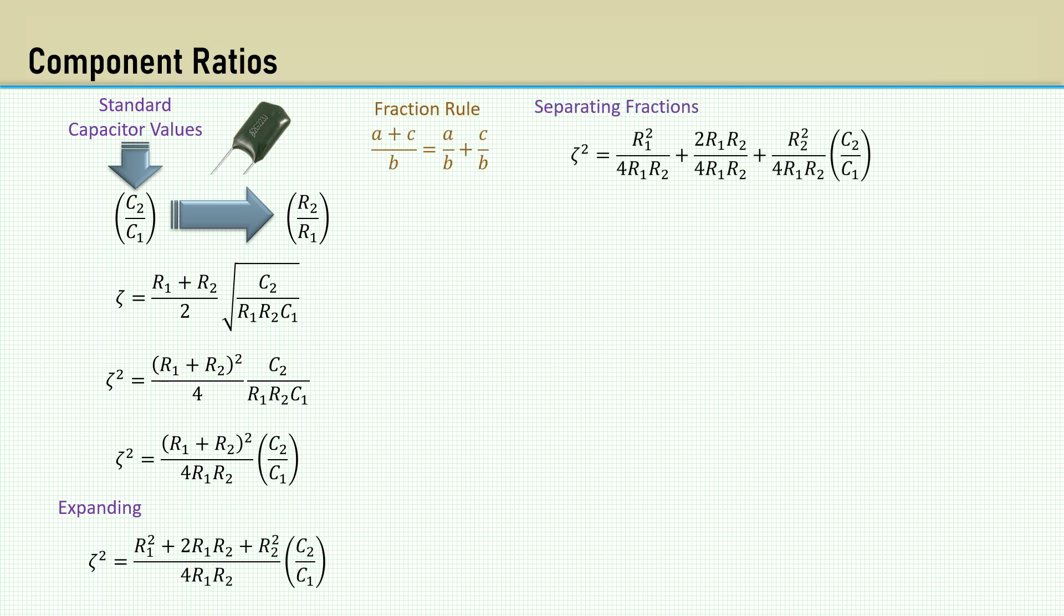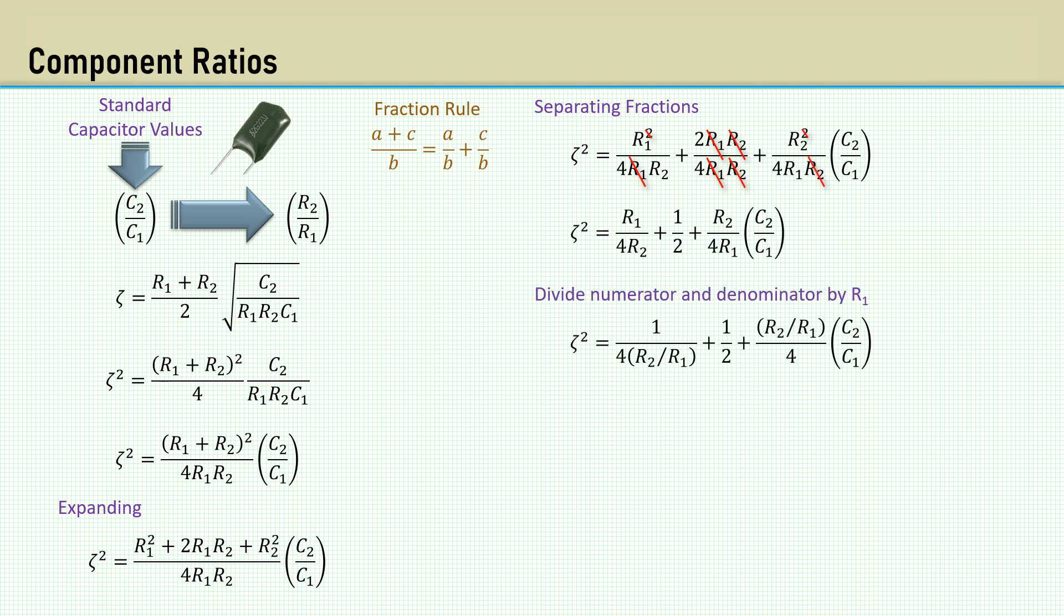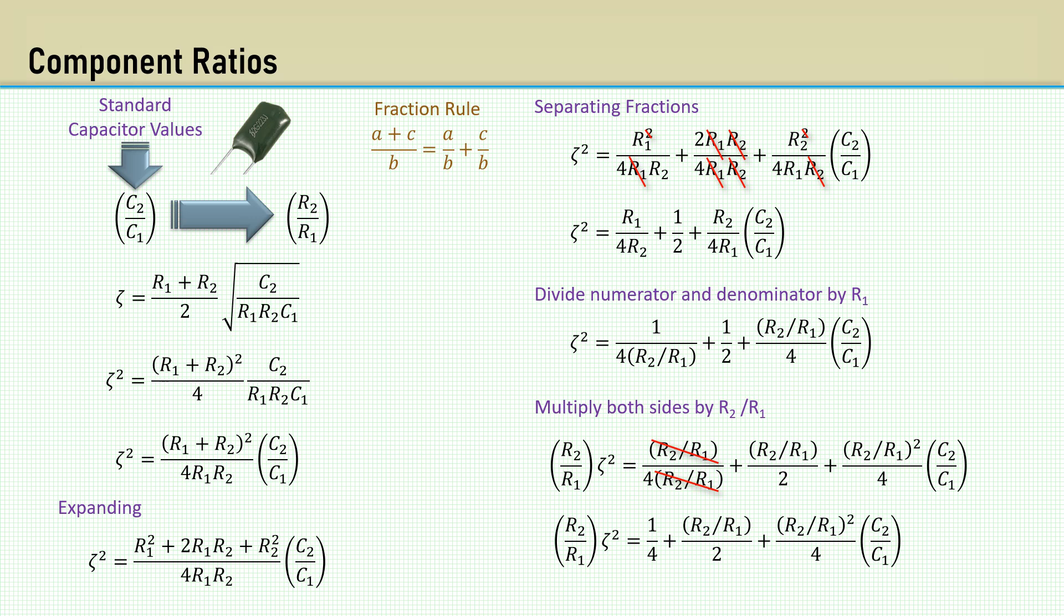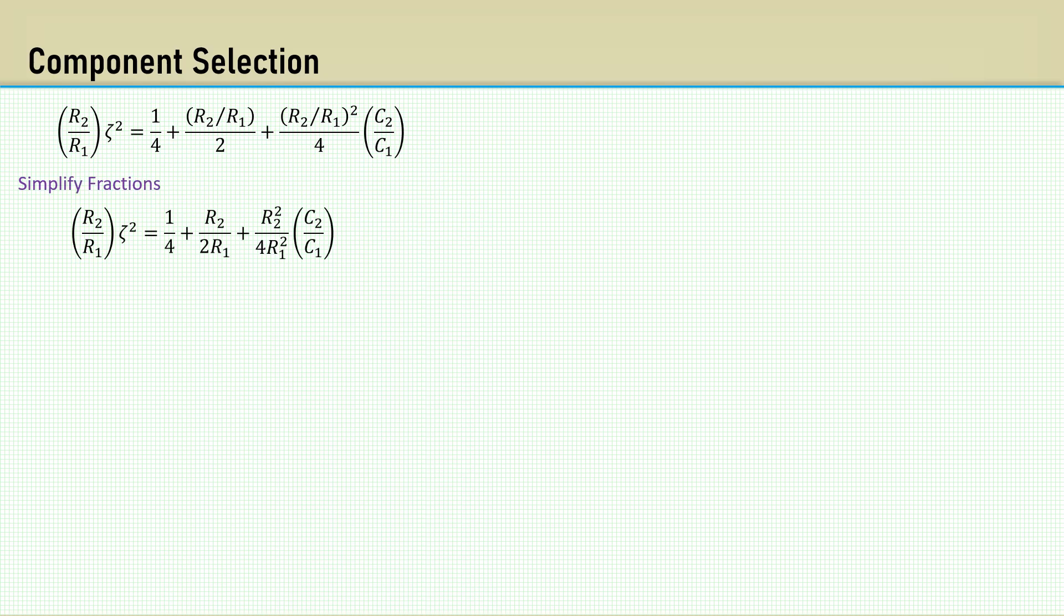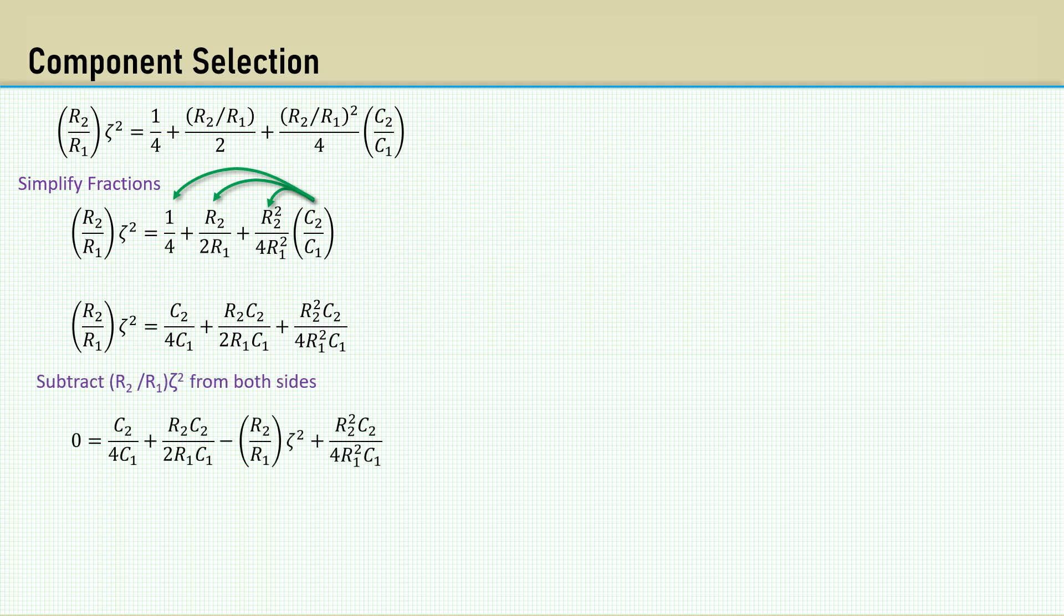Separate the fractions and several cancellations occur. Divide the numerator and denominator by R1, then multiply both sides by R2 over R1. There are more cancellations and we get this. Simplify the fractions and distribute C2 over C1 into the three fractions. Then subtract R2 over R1 times zeta squared from both sides. Factor out R2 over R1 from the two inside terms.